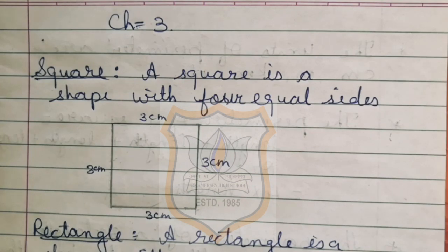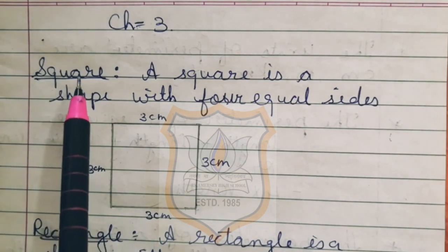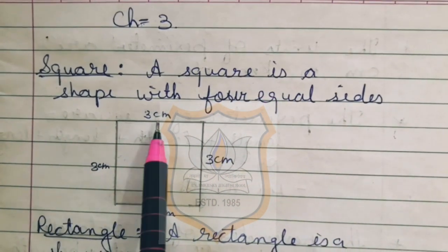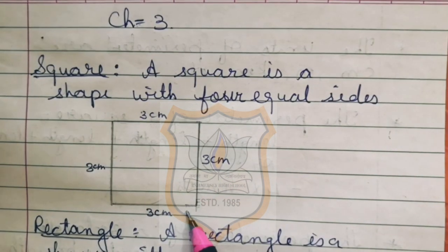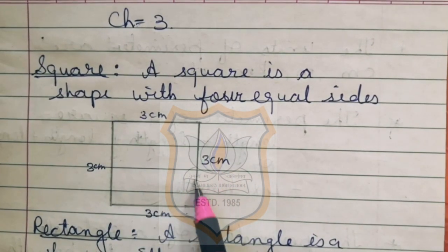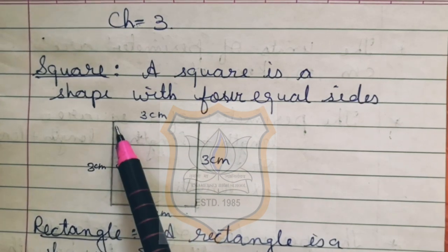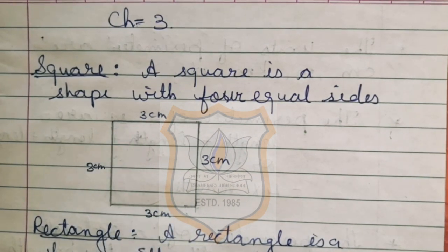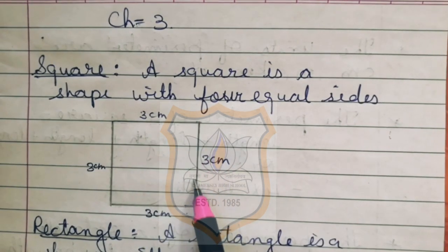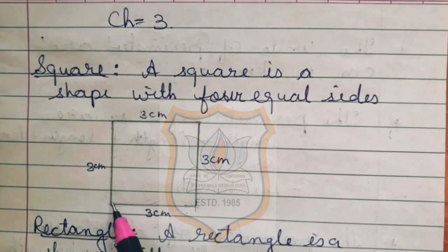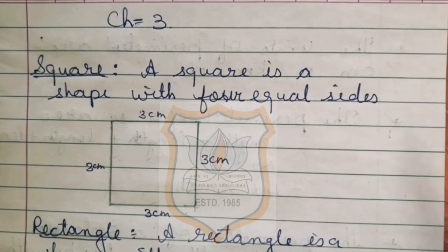Before we discuss about perimeter and area, let us explain something about square and rectangle. Now what is a square? A square is a shape with 4 equal sides. You can see here a figure is given which has 4 sides and all its 4 sides are of equal measurement. Here you can see that each side is of 3 cm. So a square shape has 4 equal sides.